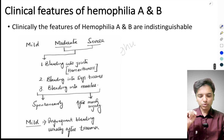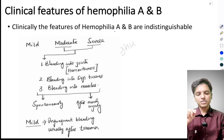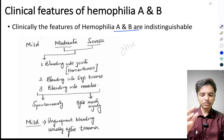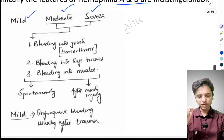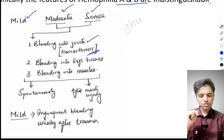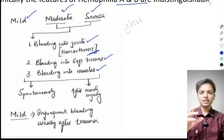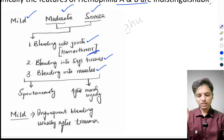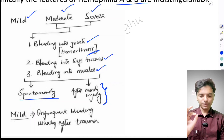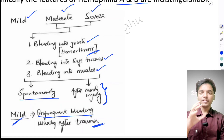Clinically, the features of hemophilia A and B are not distinguishable. The clinical features are based on the severity of the disease — mild, moderate, or severe. In moderate to severe disease, we see bleeding into the joints (hemarthrosis), bleeding into the soft tissues, and bleeding into the muscles. This can occur spontaneously or after a minor injury. In mild hemophilia, bleeding is infrequent and usually triggered by trauma.